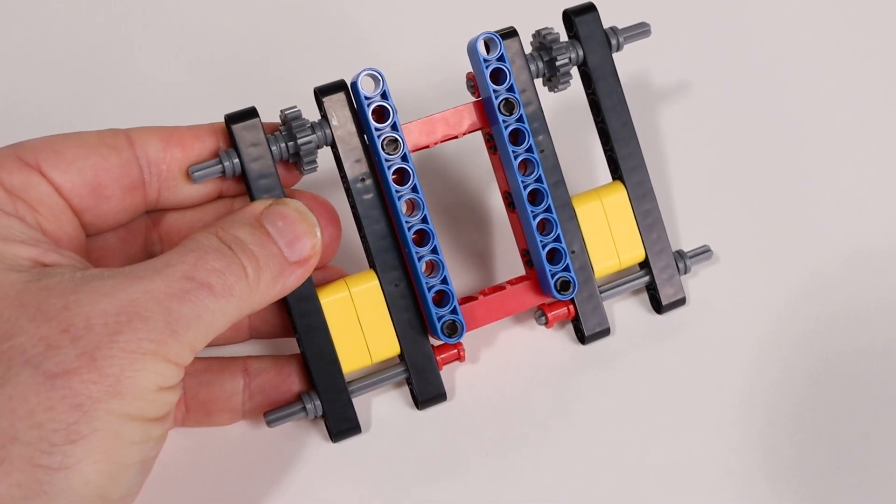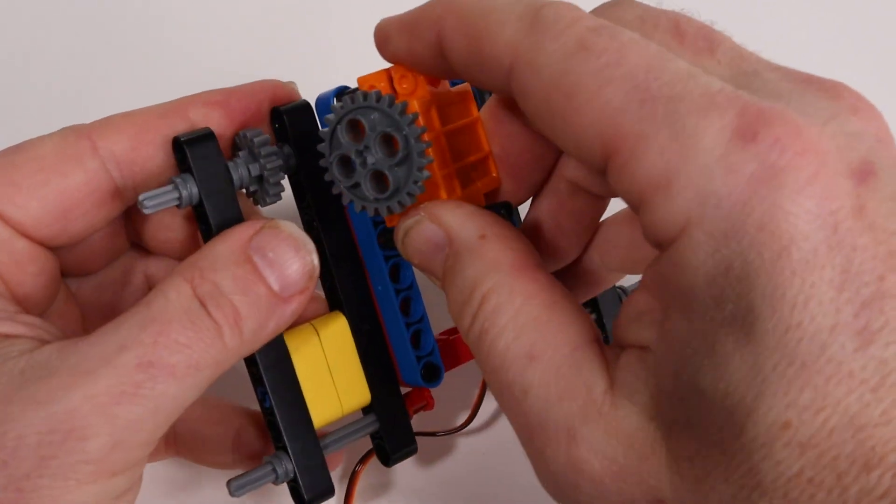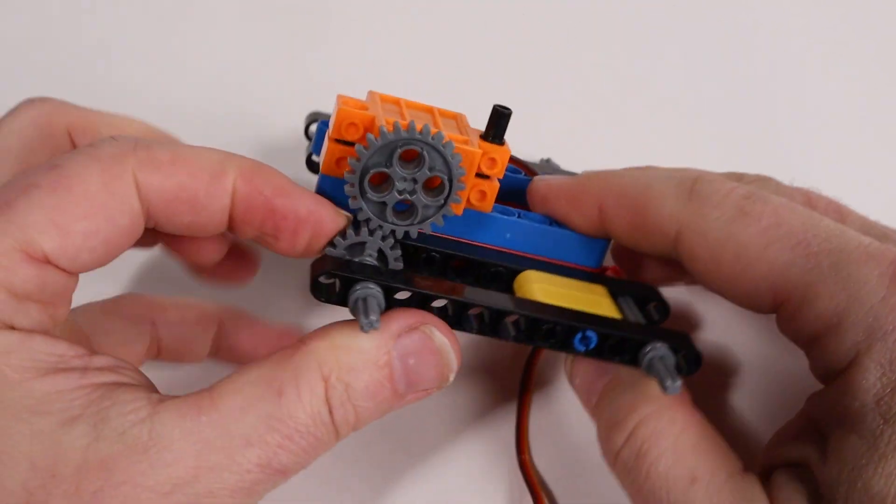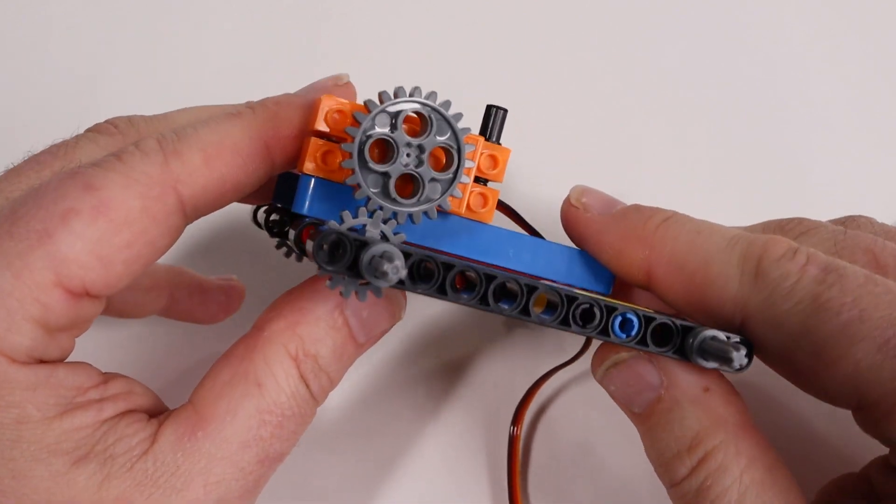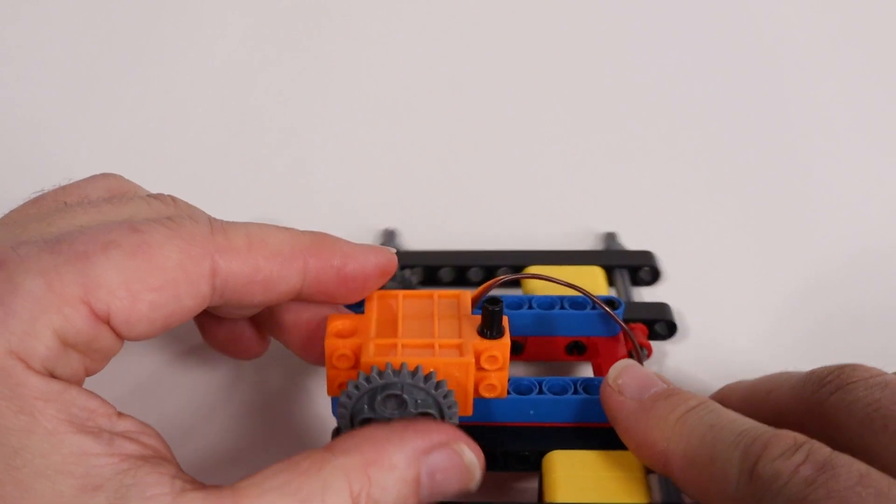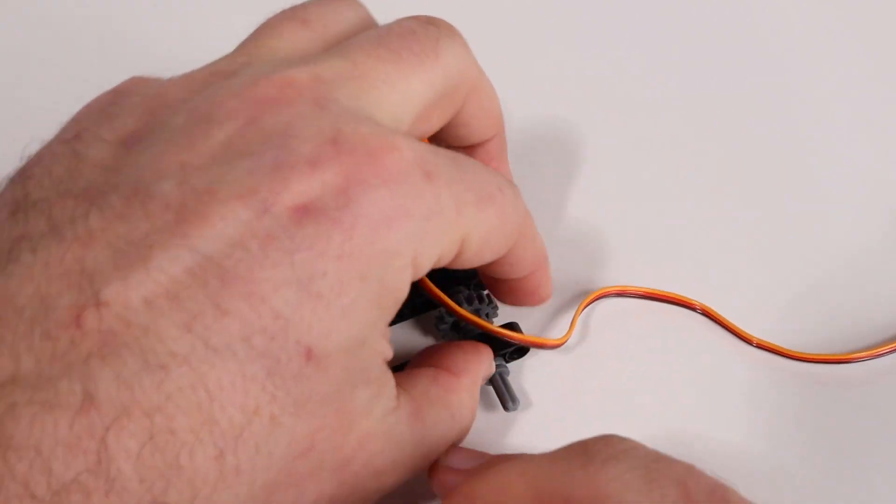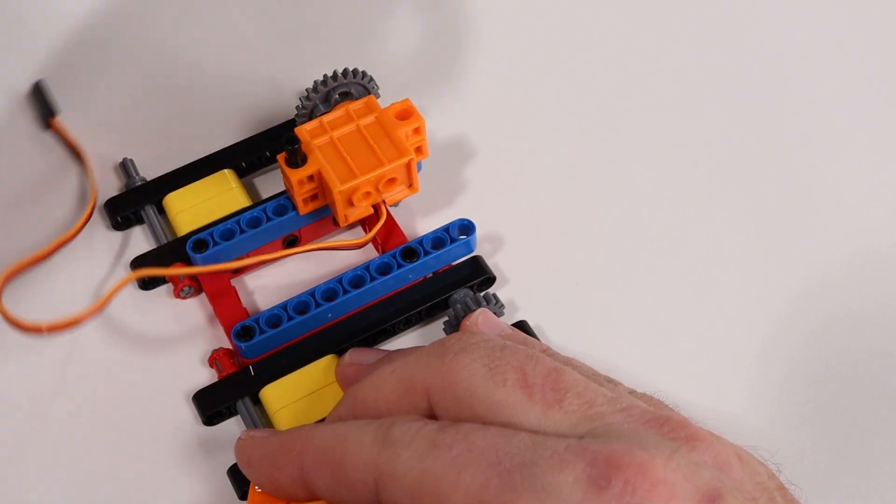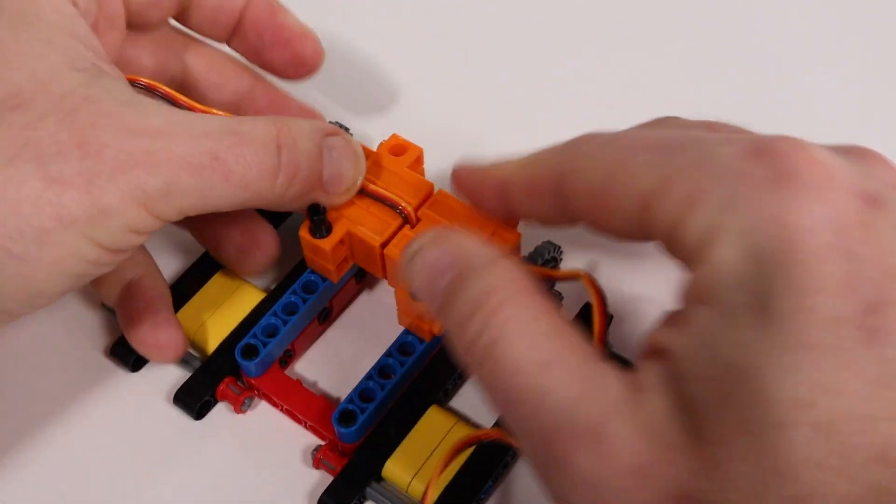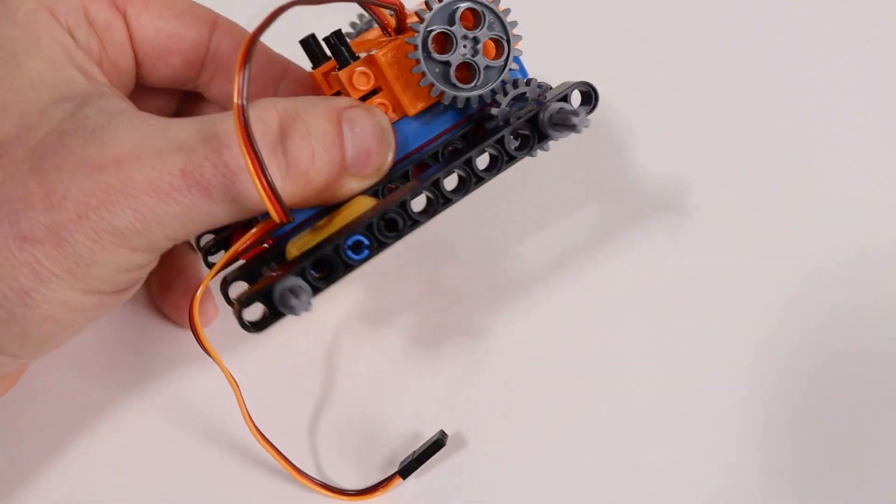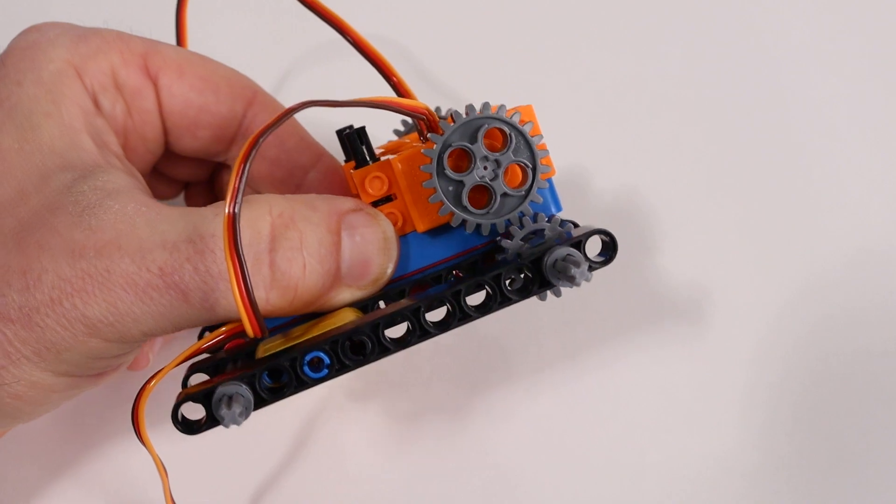Now let's add the servo to the frame. Keep in mind we're calling the end with the gears the front of the tank, so the servo will be the left servo. Notice how the gear on the servo meshes with the smaller gear. Now let's add the right servo. Keep in mind that since one of the servo wires is pointed down, we need to pull it back and out of the way into the small notch before adding the right-hand servo. Again, notice how the gear on the servo meshes with the smaller gear.